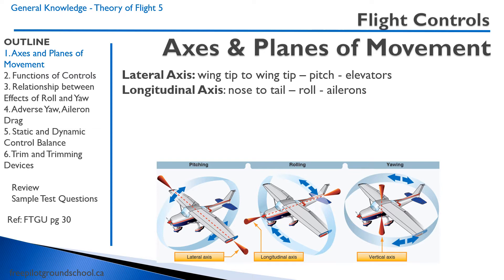Secondly, we have the longitudinal axis. The longitudinal axis runs from the nose of the aircraft to the tail of the aircraft. The movement about the longitudinal axis is called roll — rolling to the left, rolling to the right — and we use our ailerons, those are the control surfaces on the wings, to control roll.